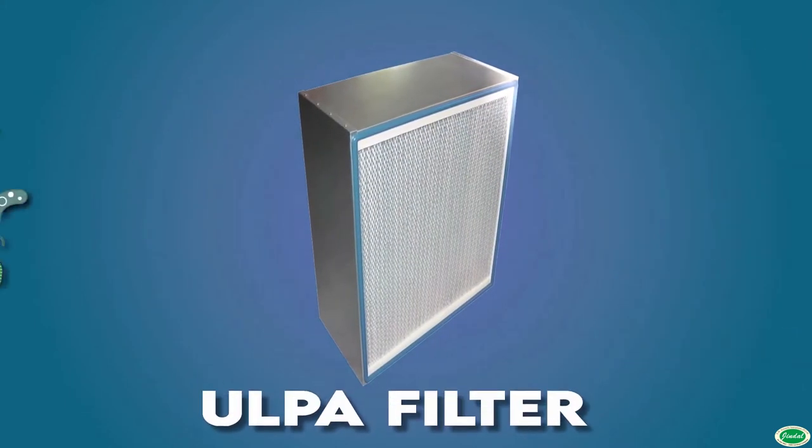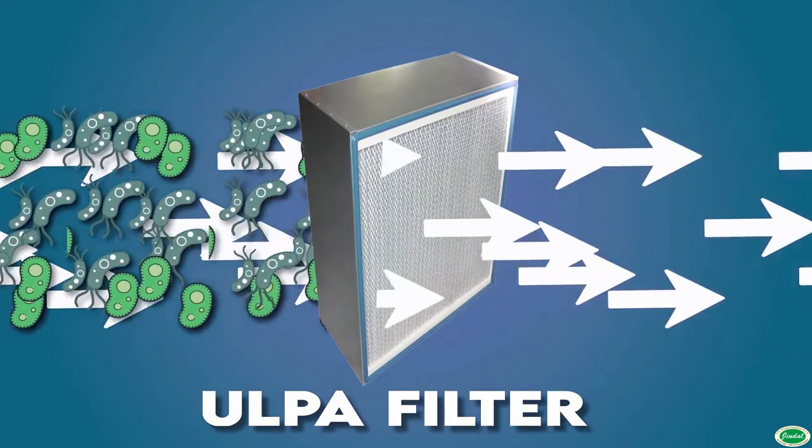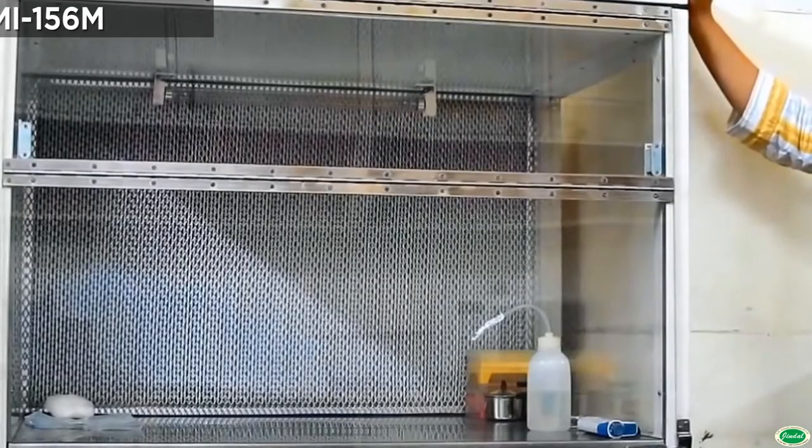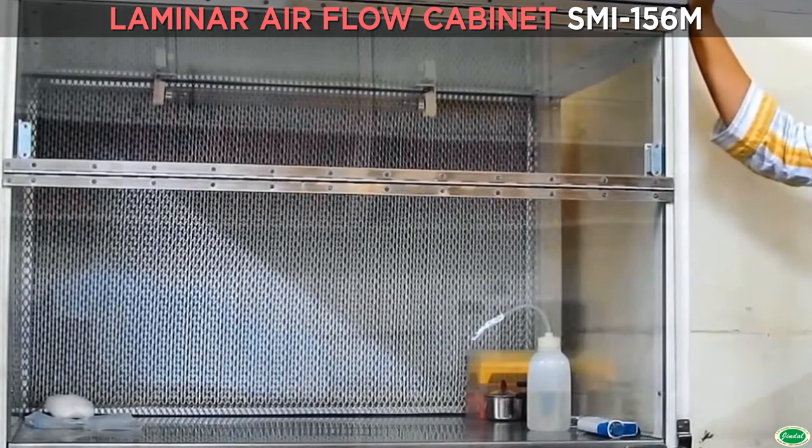Laminar flow principle involves double filtration of air. Atmospheric air is drawn through pre-filter and is made to pass through highly effective HEPA filter.